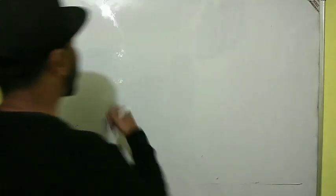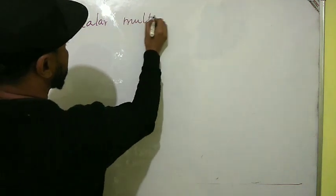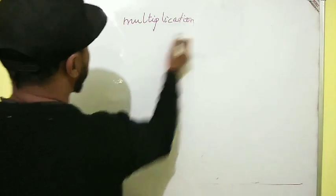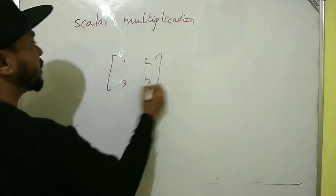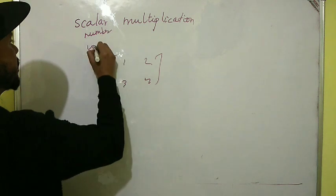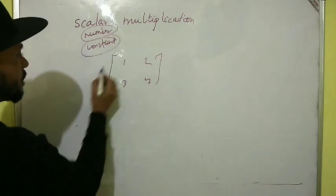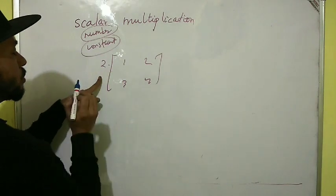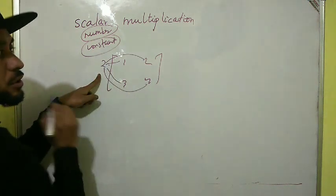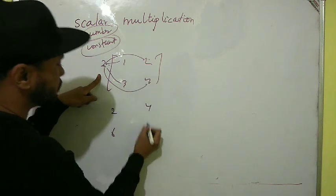One more operation is scalar multiplication. This is not the multiplication of two matrices, but the multiplication of a matrix with a constant — scalar means any number or constant. So if we multiply the matrix [1, 2, 3, 4] by 2, we multiply all elements by 2: 2 ones are 2, 2 twos are 4, 2 threes are 6, and 4 twos are 8.